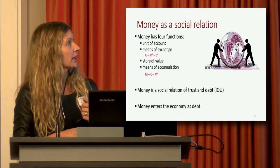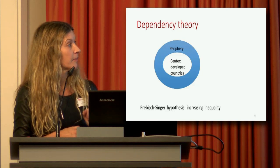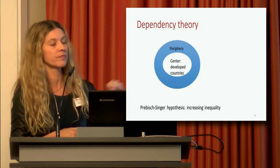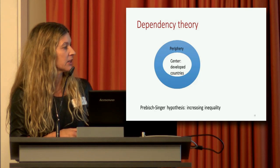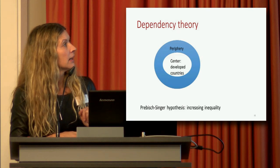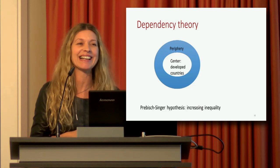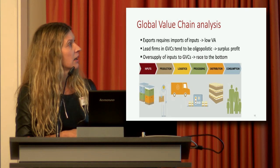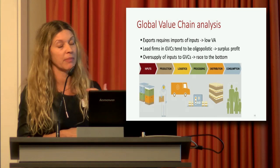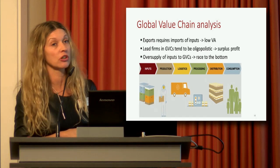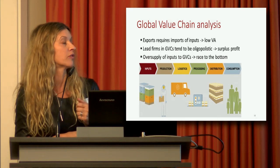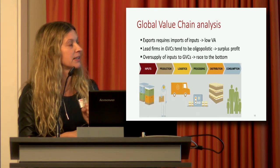On dependency theory, when we talk about development, growth, and trade — particularly for developing countries — Raul Prebisch and others proposed the Prebisch-Singer hypothesis of increasing inequality. More modern forms of trade analysis in social economics use global value chain analysis, recognizing that exports also require inputs. Many countries specializing in low-labor production experience low value added. Lead firms tend to be oligopolistic with surplus profit, and an oversupply of inputs to the global value chain from all these small producers competing creates a race to the bottom.